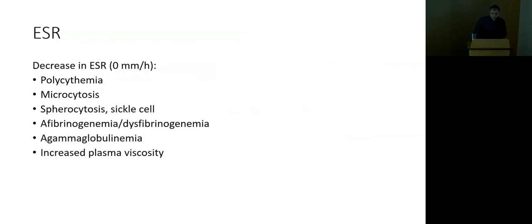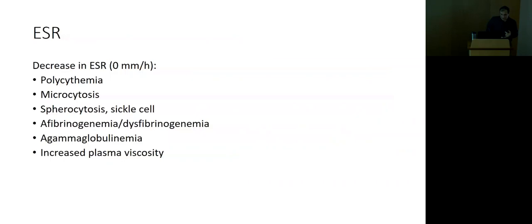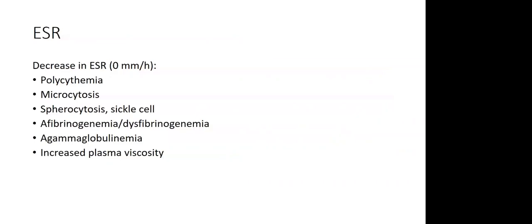There are also situations when the sed rate is not just low but actually zero. Conditions that cause this include polycythemia, microcytosis, spherocytosis, and sickle cell disease — because the number, size, and shape of red blood cells really defines the sed rate. A significant degree of spherocytosis can decrease sed rate. Other causes include absent or defective fibrinogen, immune deficiency with low immunoglobulins, and increased plasma viscosity.